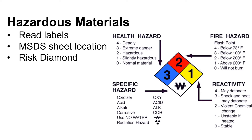Locate and read the material safety data sheet for any product you are not familiar with. The risk diamond on a product's label identifies the level of health and fire hazard, reactivity, and any special hazards. You should be familiar with how to interpret what it says — a brief explanation of the risk diamond can be seen here.